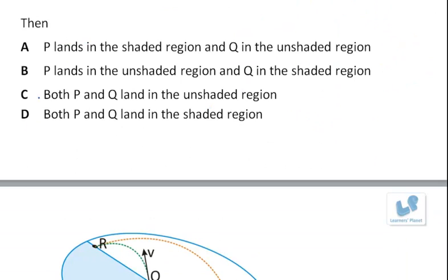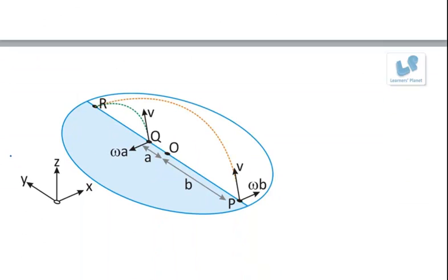Then we have to see which one of the four options A, B, C, D is correct one. Now let us look at the situation with the isometric view.